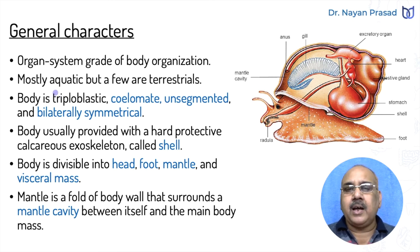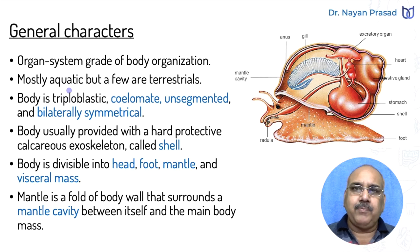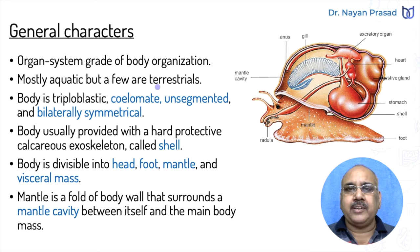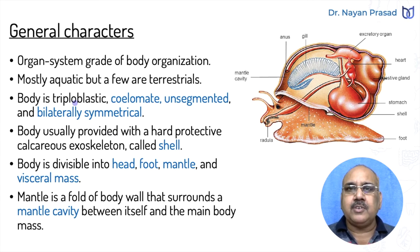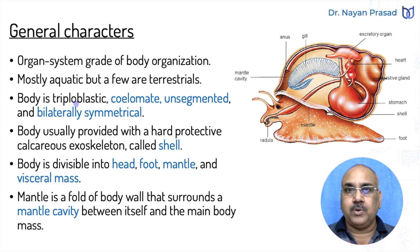They are mostly aquatic, found in water — maybe freshwater, maybe marine — but a few are terrestrial also, found on land. The body is triploblastic, meaning made up of three distinct germinal layers: ectoderm, mesoderm, and endoderm. Ectoderm is the outer layer and endoderm is the inner layer.